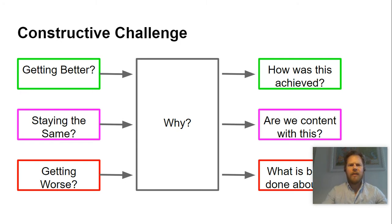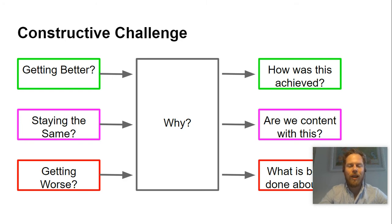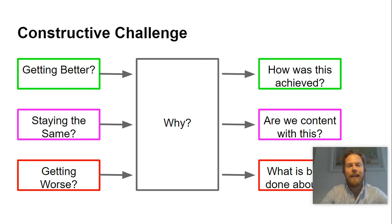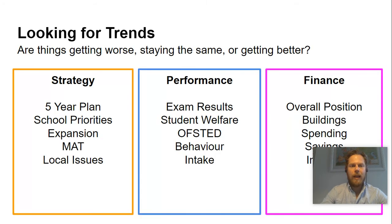So let's imagine things are getting better — one particular subject is getting fantastic results suddenly. Brilliant. How was this achieved? Can we apply it to other areas? Are things staying the same? Has a school received a good Ofsted rating for four inspections in a row? Great news. But are we happy with that? Do we want to push for an outstanding rating next time? Or are things getting worse? And why is that? And this breaks down further, of course, under strategy, performance and finance into these areas broadly.